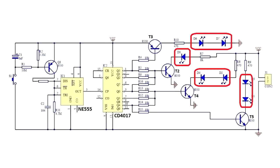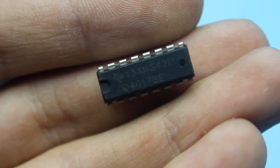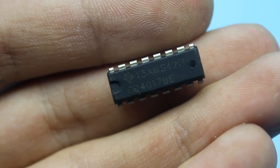So, we have 7 LEDs, the chip of NE555 timer and the chip CD4017, which is a decade counter with 10 decoded outputs.